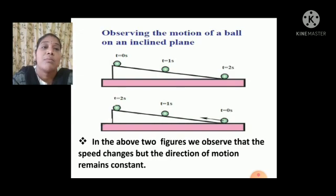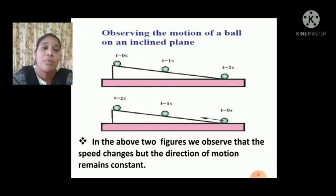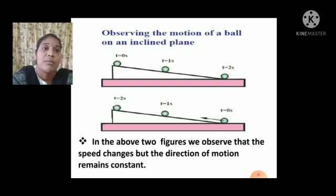Now let us discuss one activity: observing the motion of a ball on an inclined plane. I have taken one ball and released it on an inclined plane. From the picture, at time t = 0 seconds the ball starts, at t = 1 second the ball covers some distance, and at t = 2 seconds the ball covers a different distance. This means the distance is changing, but the direction is not changing.